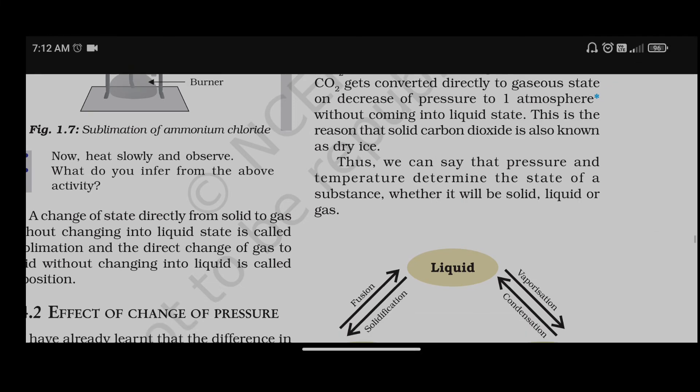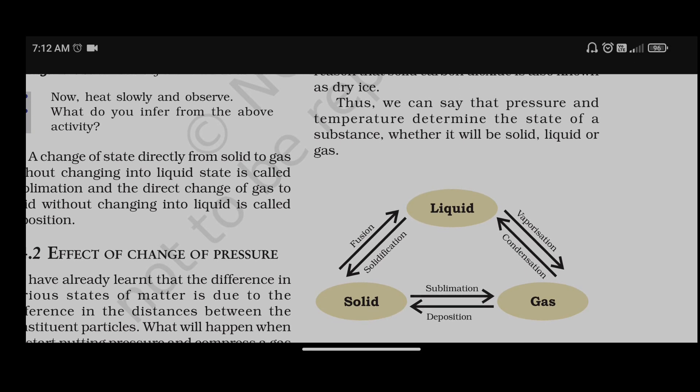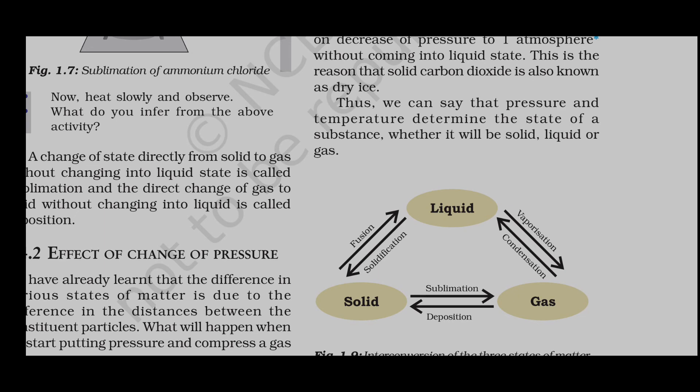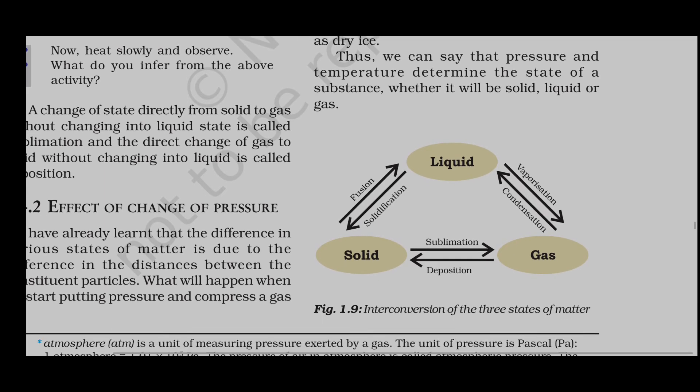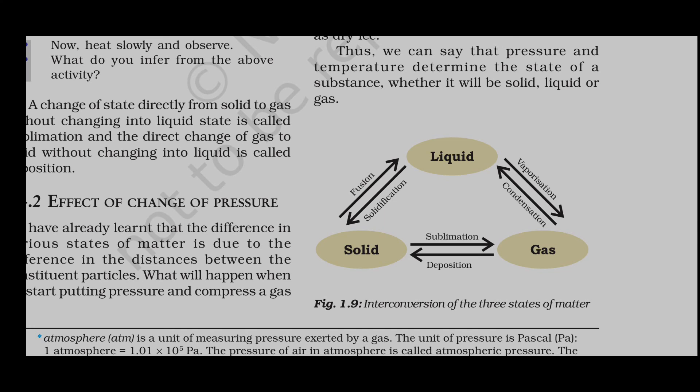Thus, we can say that pressure and temperature determine the state of a substance — whether it will be solid, liquid, or gas. Looking at the diagram: melting converts solid to liquid, vaporization converts liquid to gas, deposition converts gas to solid, and condensation converts gas to liquid. The states are inter-convertible.